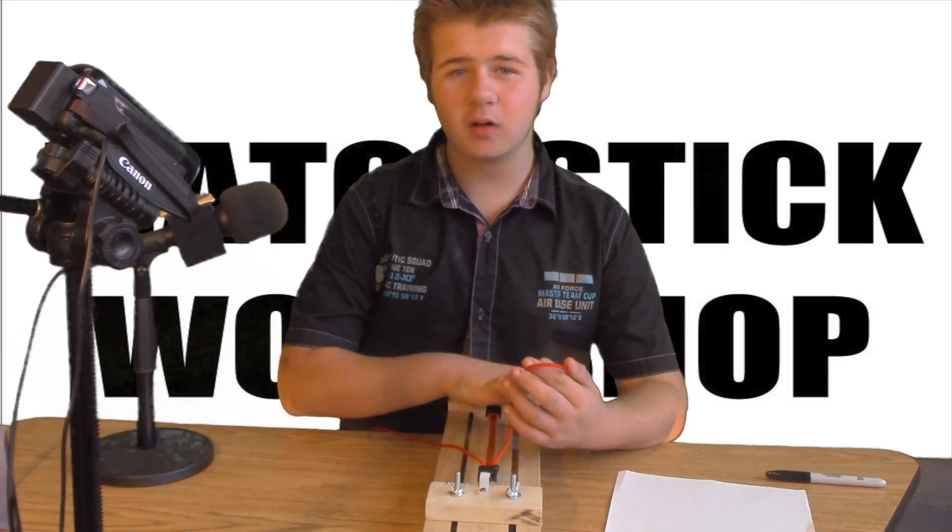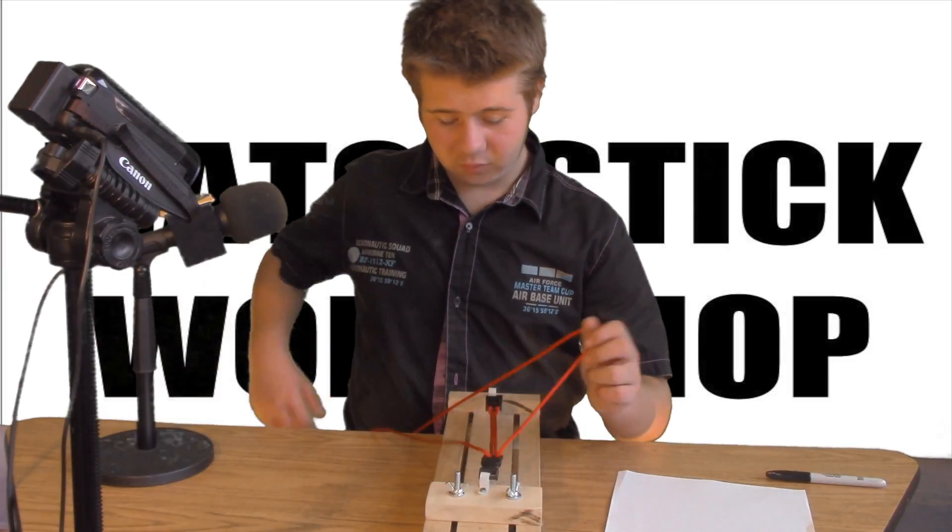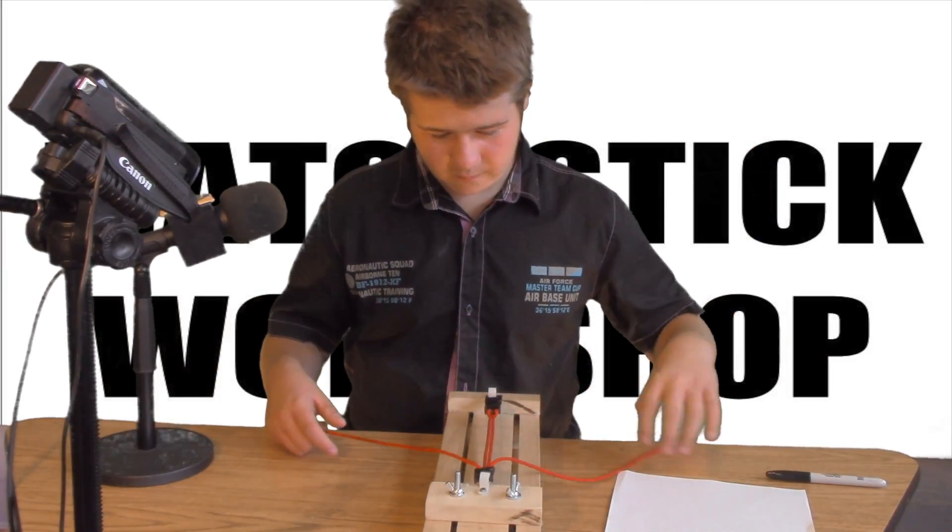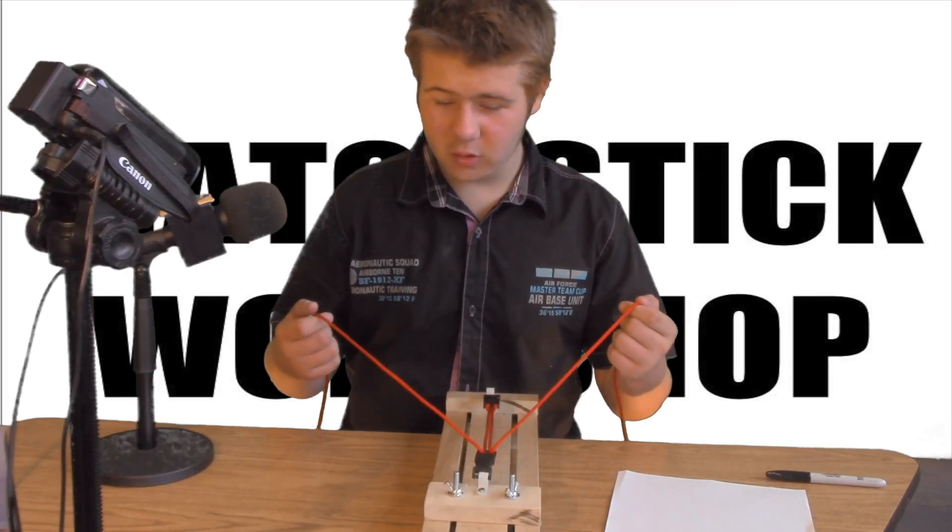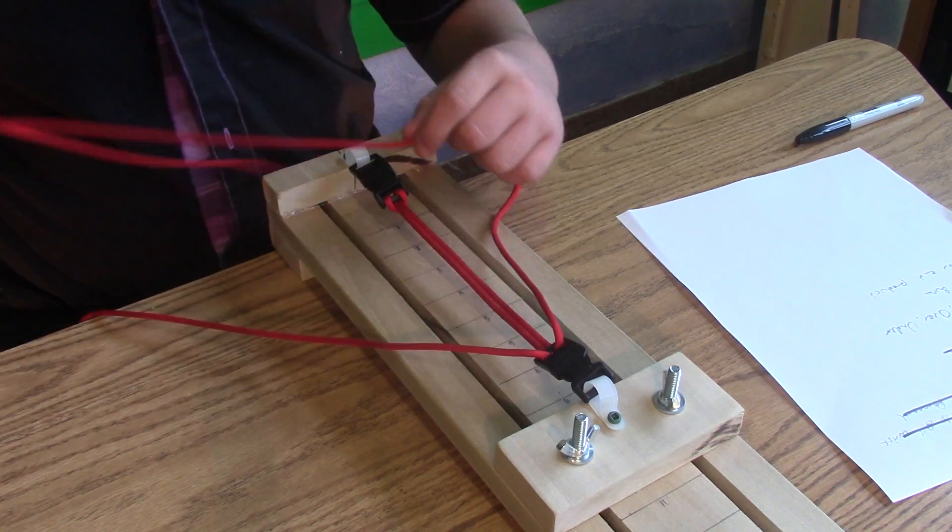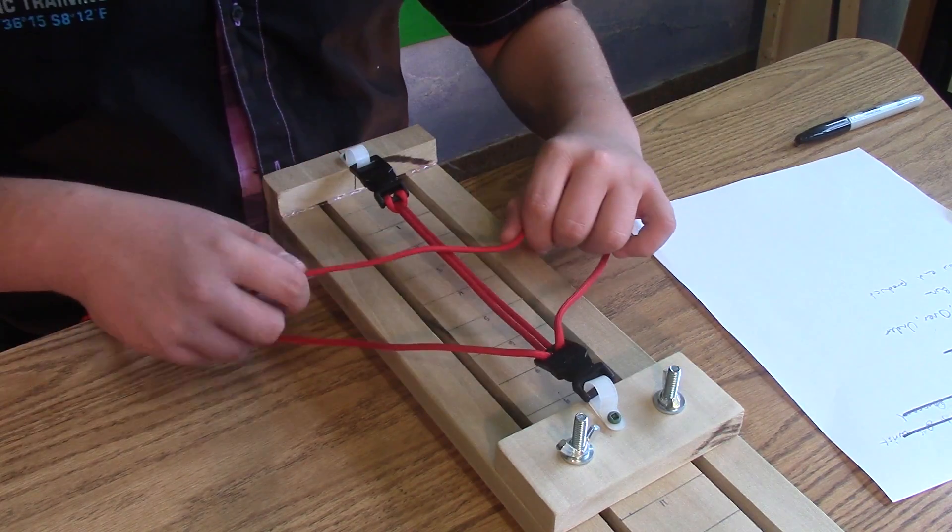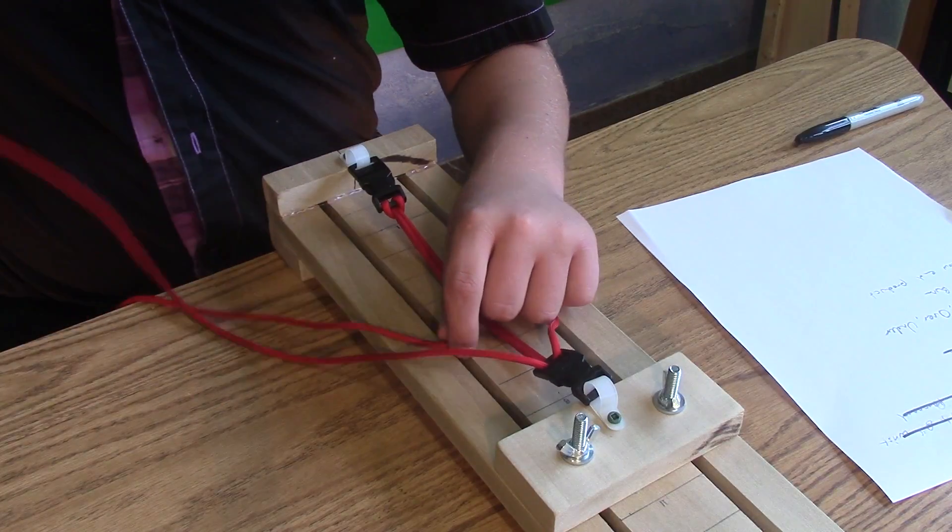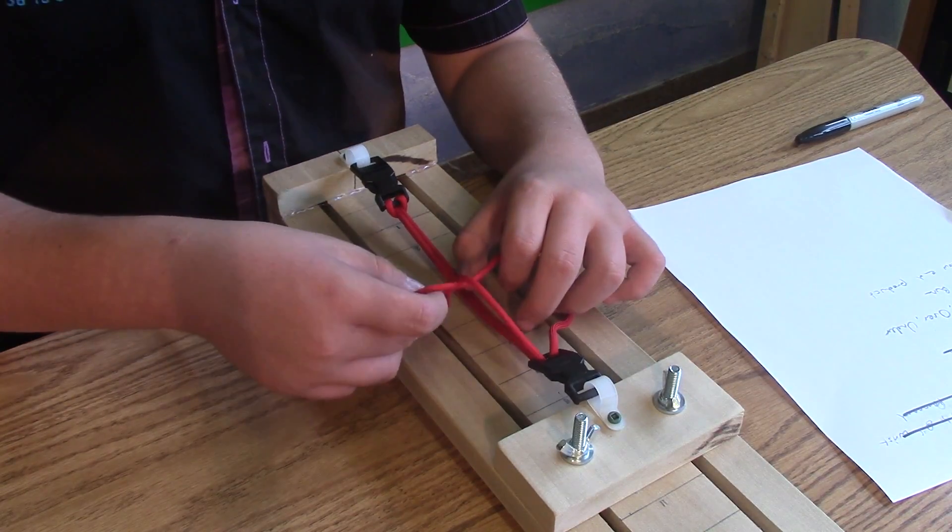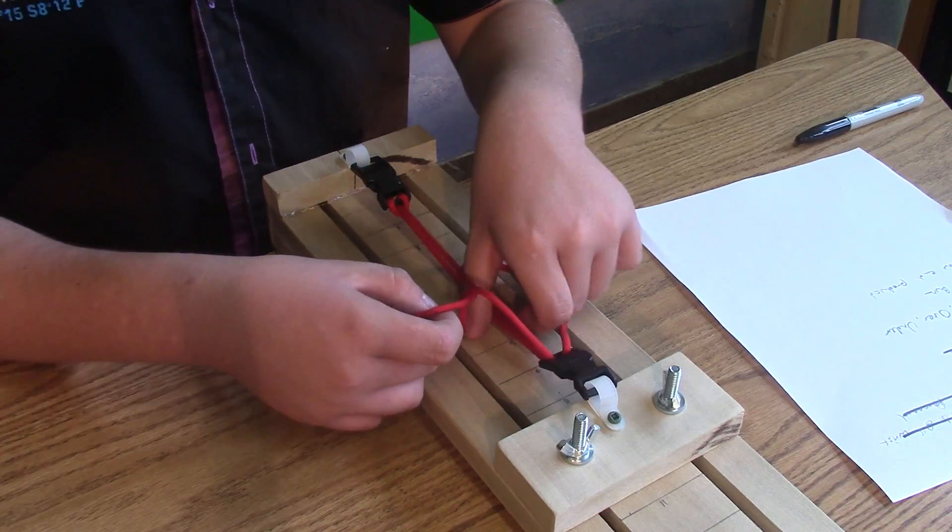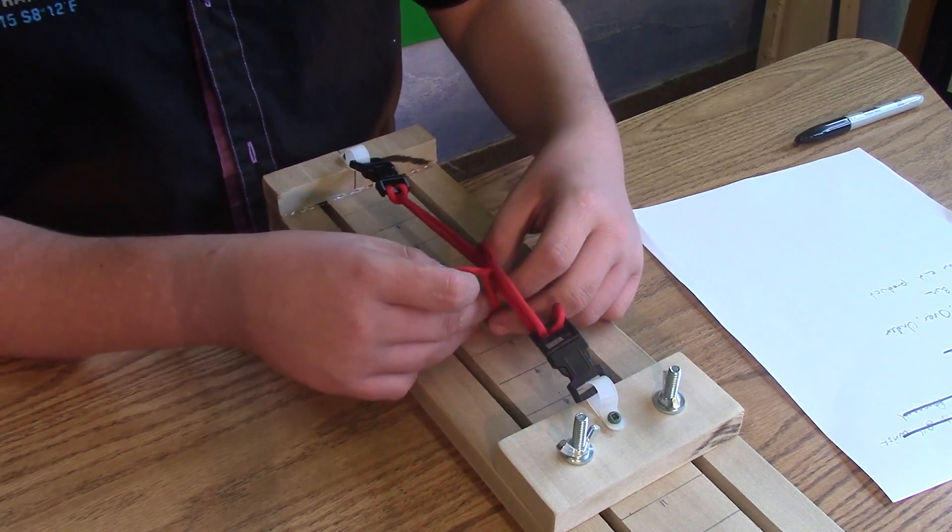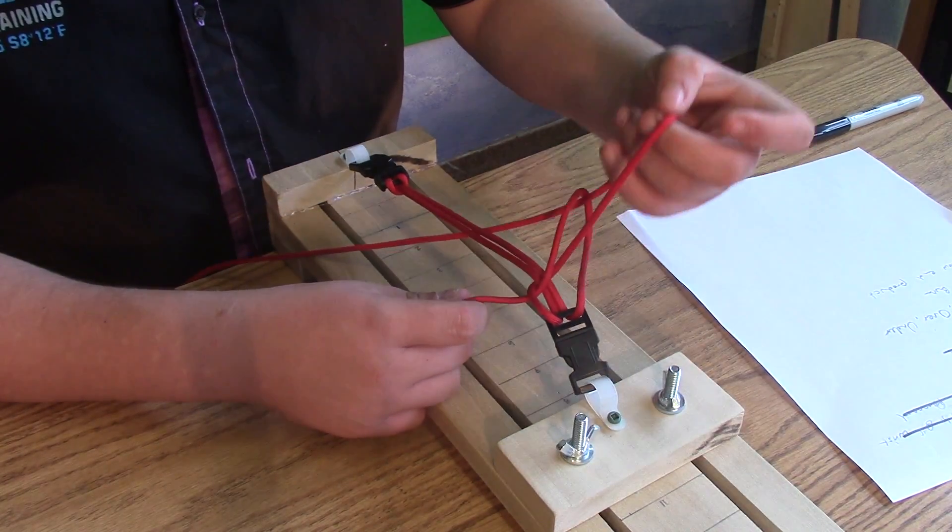So now I'm going to start doing the pattern. What you have to do is, you have your left and right string, and so you put your left string under, and your right string over it. Then you take your right string, put it underneath the two, and into the loop that you made.